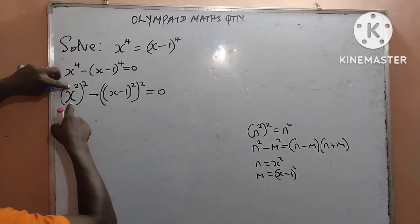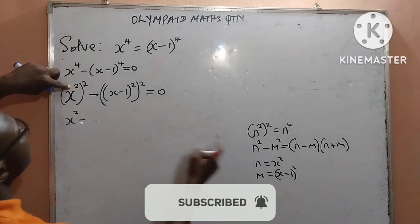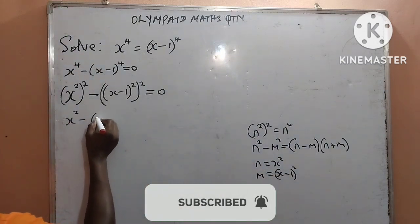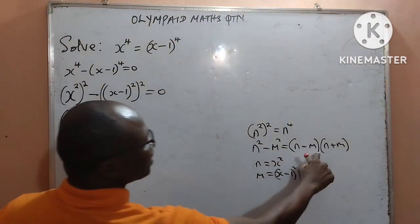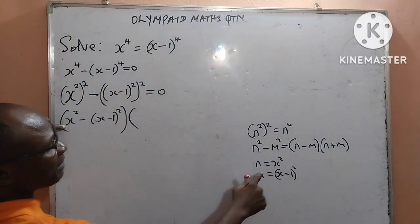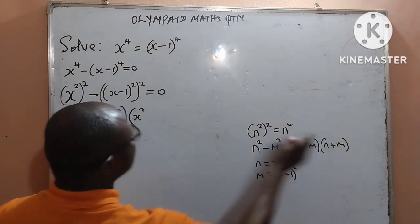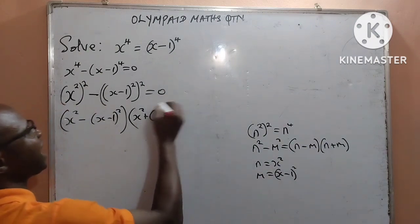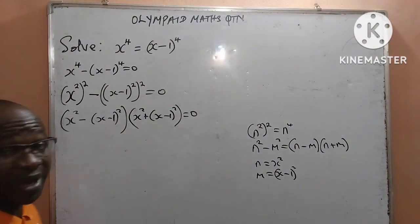So I will now write this using the difference of two squares. I will have x squared minus x minus 1 squared, everything in the first bracket, then times x squared plus x minus 1 squared, in the second bracket, equal to 0.